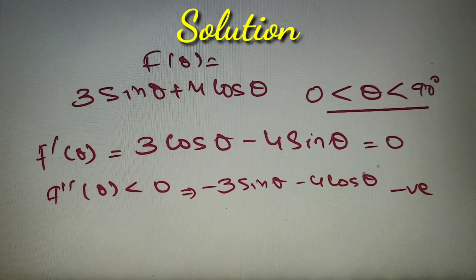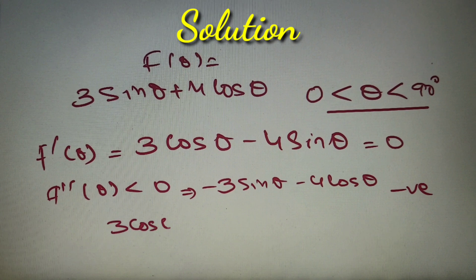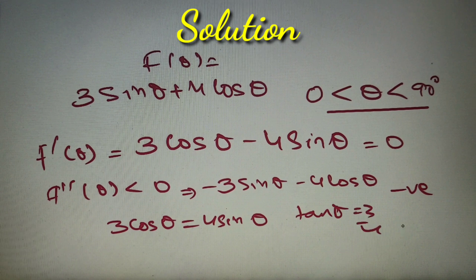So we have to equate it to 0. We will get 3 cos theta equals 4 sin theta, or we can say that tan theta is equal to 3 by 4.